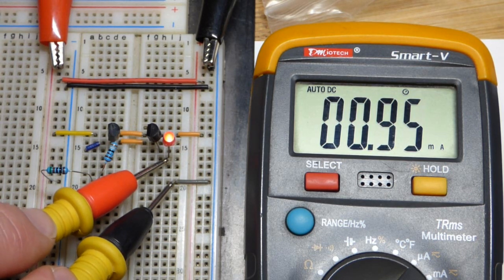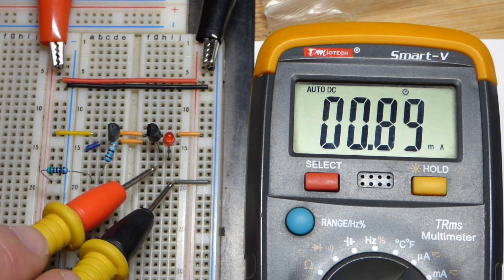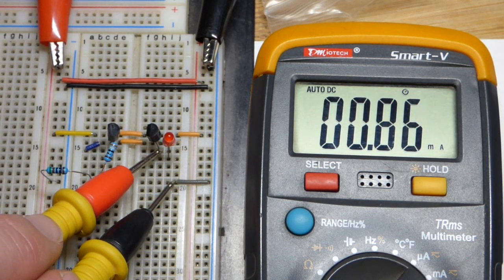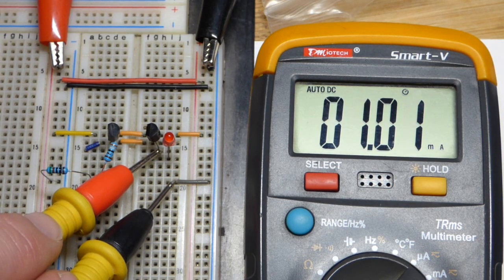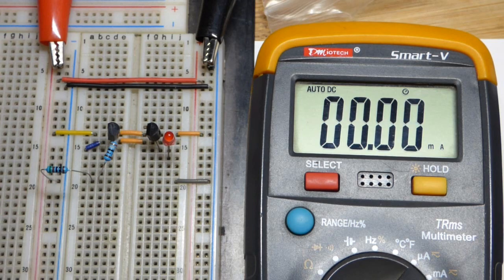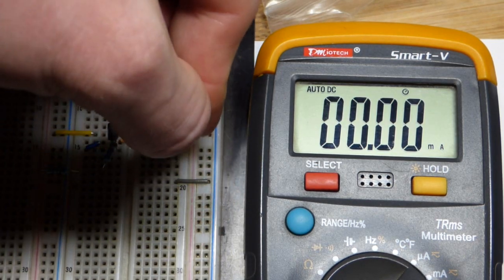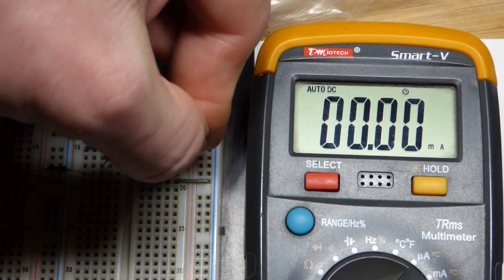We can just go to the milliamp setting. Set it to a number of measurement of current than what you expect to measure. This is auto ranging though, so we don't have to worry about that. There you can see slightly less than 1 milliamp of current, basically 1 milliamp flowing there.